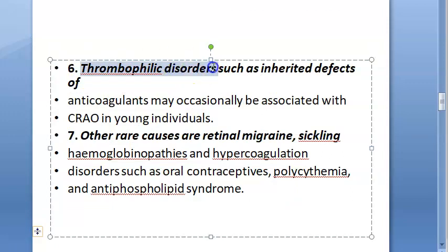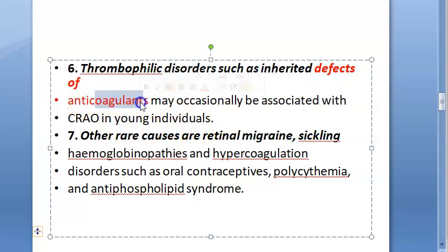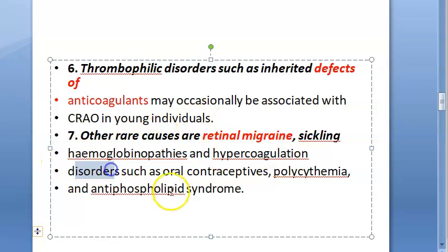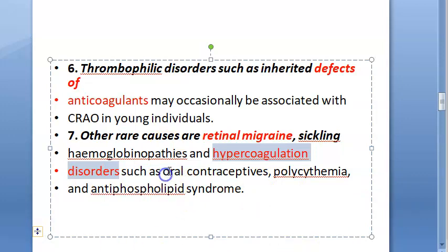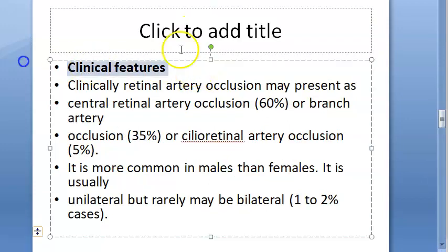Additional causes include thrombophilic disorders with defects of anticoagulants, leading to excessive coagulation. Other rare causes are retinal migraine, sickling hemoglobinopathies, hypercoagulation disorders — which directly cause occlusion by preventing proper blood flow — and oral contraceptives.